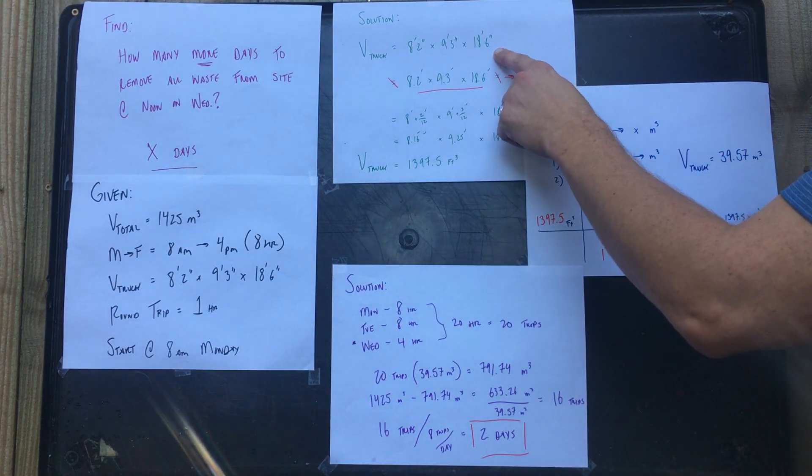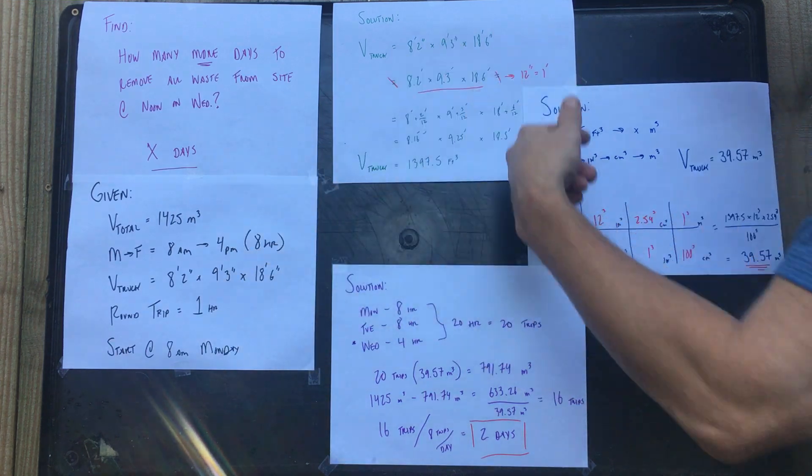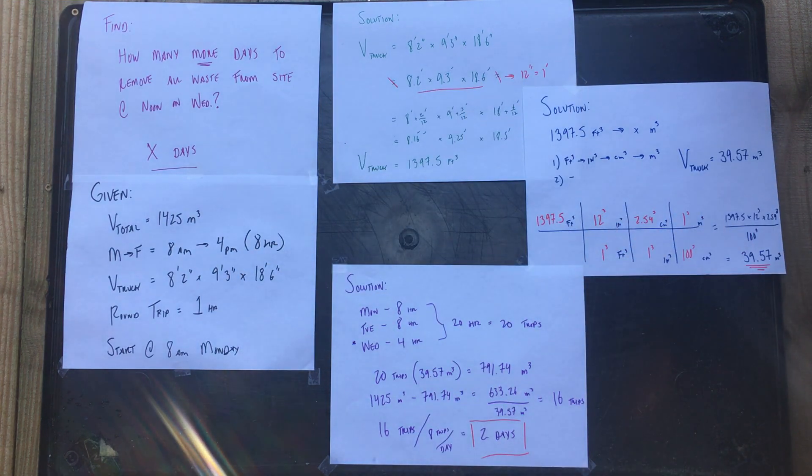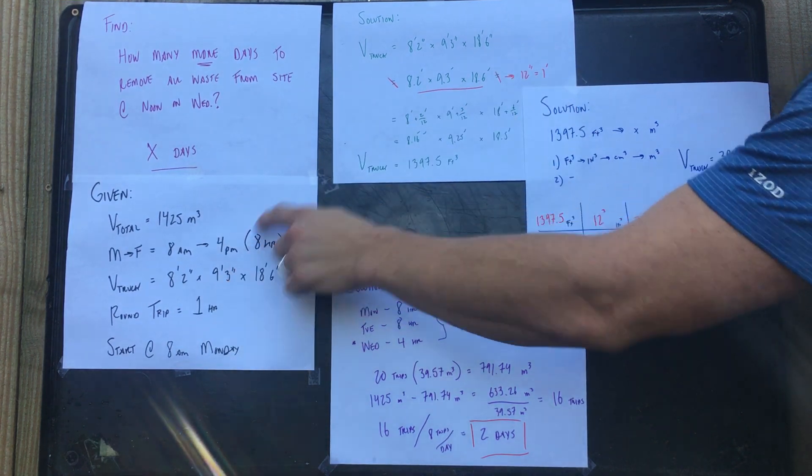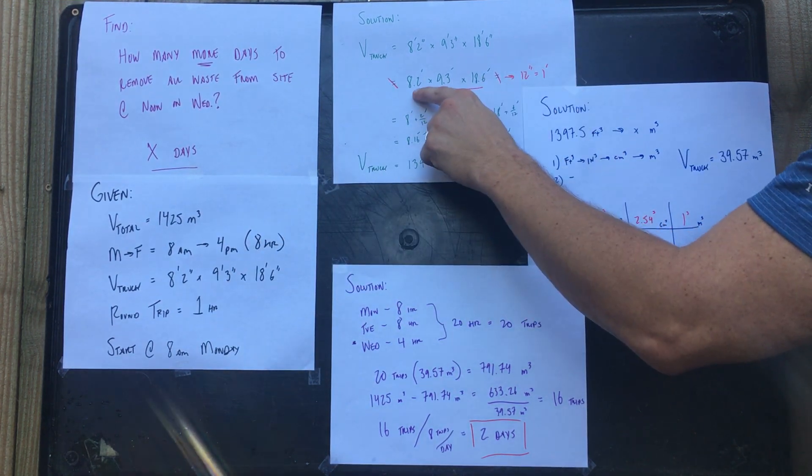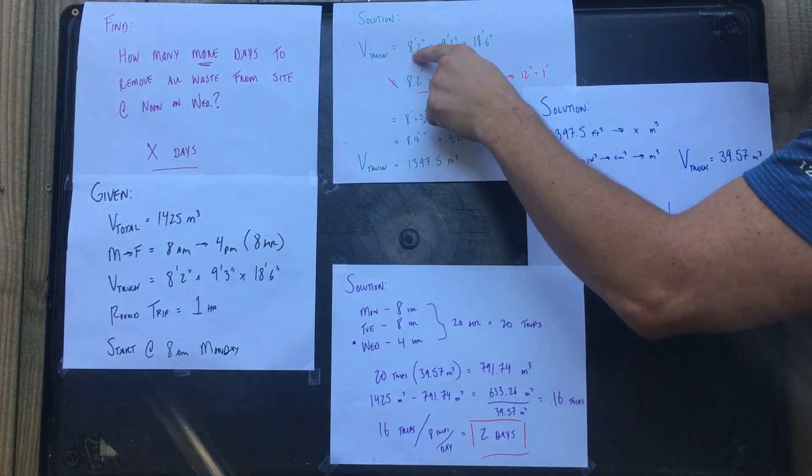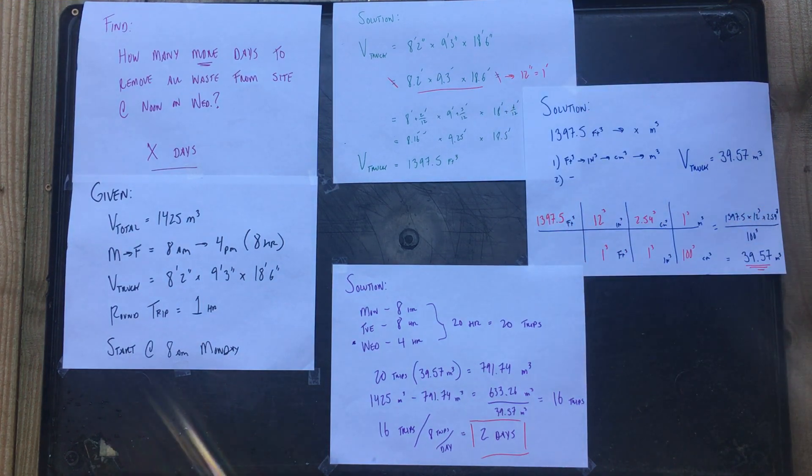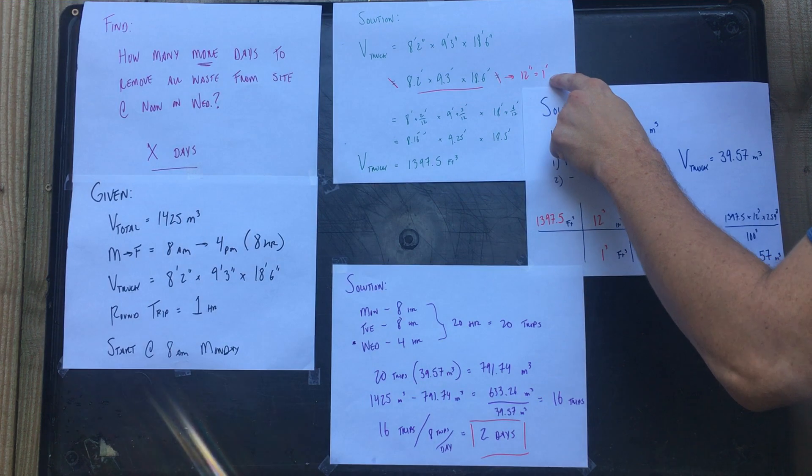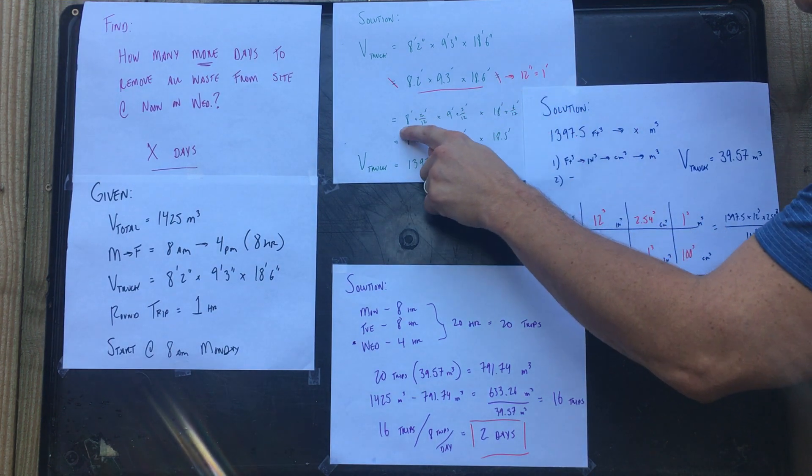Rewrite everything - the more information you put down, the more credit I can give you. What some students do is put a decimal point between these two numbers; that doesn't work because there's not 10 inches in a foot. There's 12 inches in a foot, so essentially what you need to be doing is 8 feet plus 2 over 12 feet.